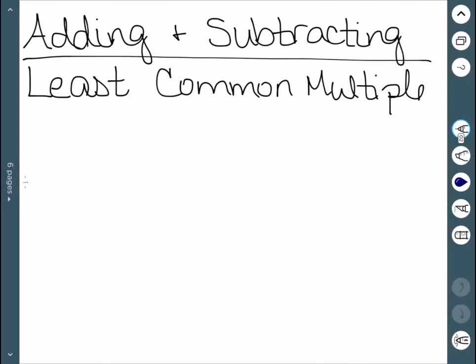We'll now look at adding and subtracting rational expressions using the least common multiple method. The first step is to figure out what is the least common multiple of the denominators, and we'll walk through a few steps to do that.